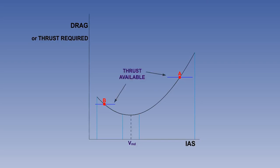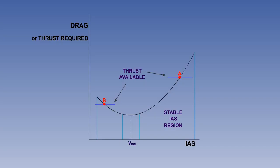For an aircraft in steady flight, if there is a change in speed without a change in power or thrust, there will be either an excess or a deficiency of thrust available, depending on the trim speed. We shall consider an aircraft at two speeds, at points A and B. If at speed A the speed is disturbed and rises, drag also rises and a thrust deficiency exists. The aircraft then decelerates and settles back at its original speed. In this area of the curve, the aircraft is speed stable.